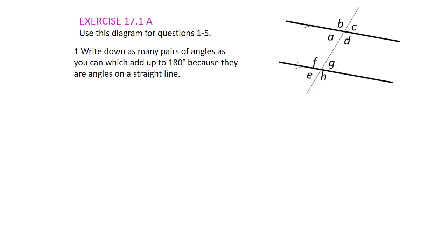The first question says: write down as many pairs of angles as you can that add up to 180 degrees because the angles are on a straight line. So for example, this is a straight line here, and a plus b add up to 180 degrees — that would be one pair.